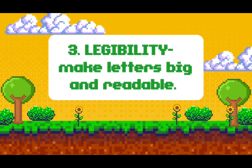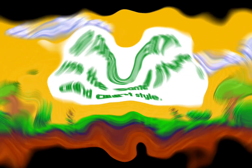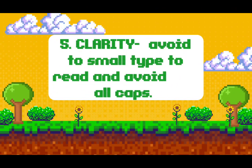Number three is legibility: make the letters big and readable for all the audience, especially those at the back. Number four is consistency: use the same type style and art style to communicate clearly the intended message. Number five is clarity: avoid type that is too small to read and avoid all caps. Observe proper writing to avoid confusing the audience.